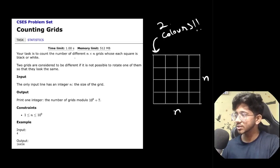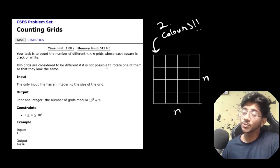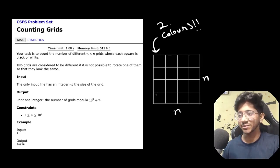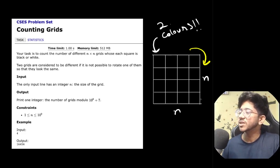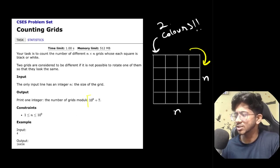This is a CACS problem — counting grids. The problem says you have an n×n grid and each square is painted either white or black. You have to find how many different such colorings are possible using two colors, white and black, such that it's not possible to rotate one coloring to get another. We also have to find the answer modulo 10^9+7, and n is up to 10^9.